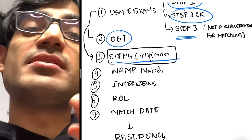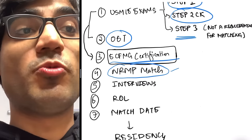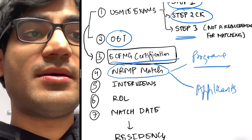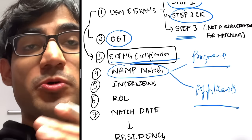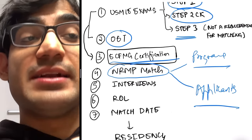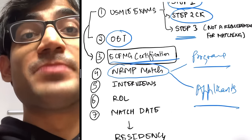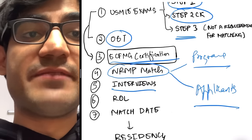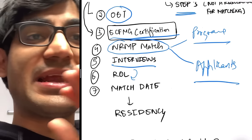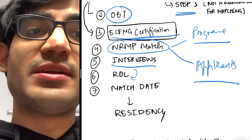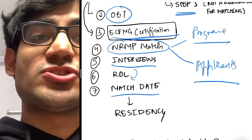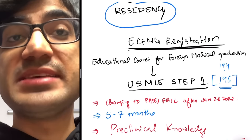After ECFMG certification, you can apply for the NRMP match where programs and applicants participate. Applicants apply to different programs and if the program likes your application and scores, they'll send you an interview. After interviews, programs and applicants submit rank order lists. Then the NRMP declares who has matched or not on match date, and once you're matched, you get into residency.